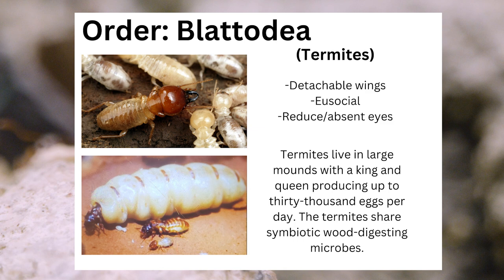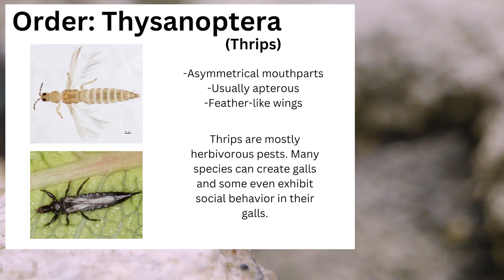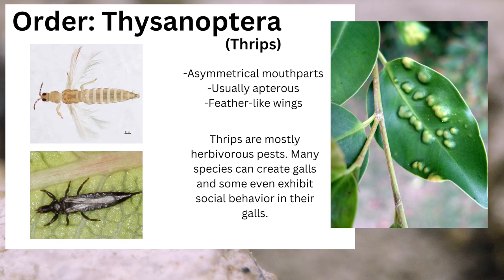The order Thysanoptera contains the thrips — thrips being both plural and singular. They can be identified from their asymmetrical mouthparts, their usual lack of wings, and when they do have wings, they are feather-like. Thrips are mostly herbivorous pests. Many species can create galls, and some even exhibit social behavior in their galls.